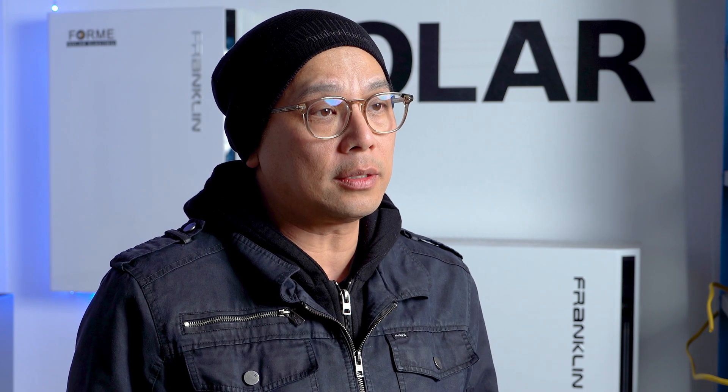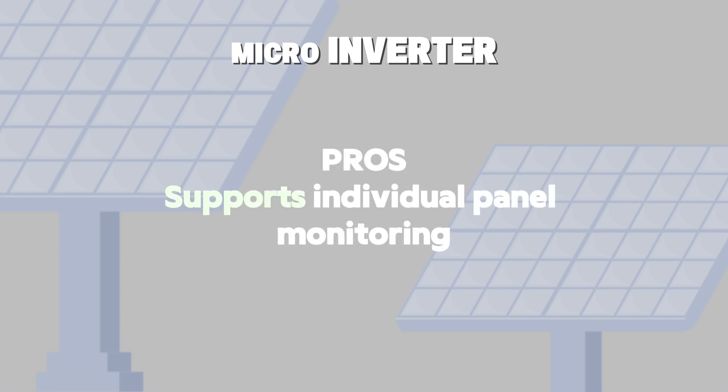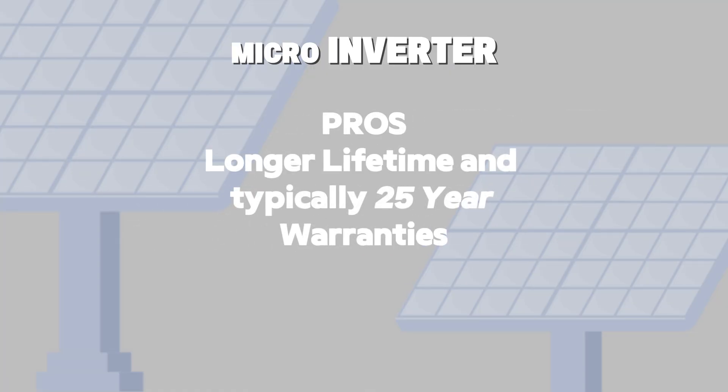Microinverter systems fix these issues by allowing each panel to adjust according to its own conditions. So for example, shading on one panel won't necessarily affect the rest of the panels in that string, instead allowing each of them to adjust individually rather than being dragged down by the one panel that's underperforming. You also have the benefit of seeing the real-time performance of each individual panel. Microinverters, which have a longer lifetime, typically come standard with those 25-year warranties instead.